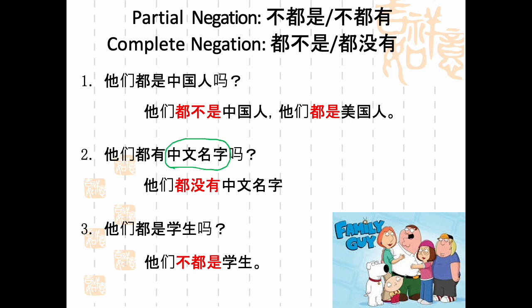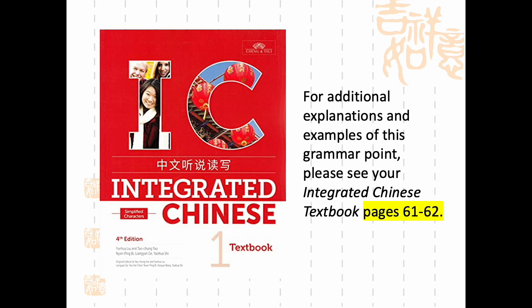都 — meaning all — is the inclusive marker. The partial negation and complete negation patterns can get a little confusing, so we will get a lot of practice in class. I'd suggest going back over these slides. I'd also strongly encourage you to reference your textbook, pages 61 to 62, which has excellent explanations and examples of how 都 is used in everyday sentences.